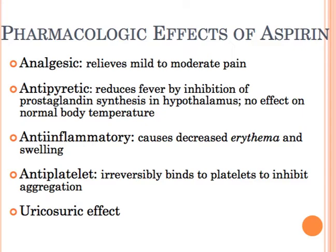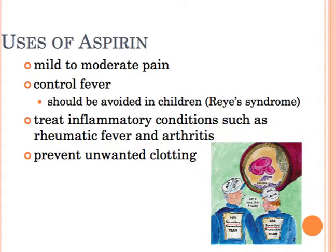If you suspect that somebody is having a heart attack, you can have them chew on one full-strength tablet and then get to the emergency room as soon as possible. Large doses of aspirin have a uricosuric effect, which means it can increase the elimination of uric acid — and this is something that's too high in patients that have gout. So the uses of aspirin are: pain, fever, inflammation, and clotting.